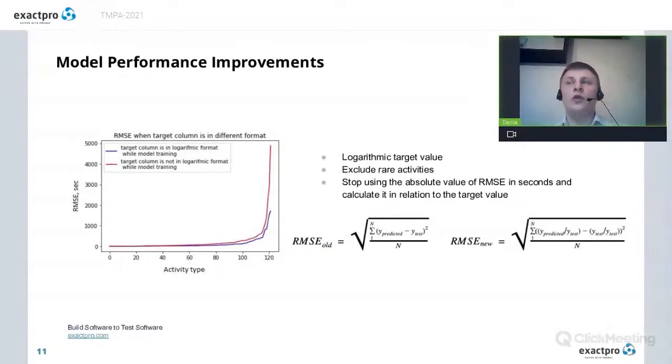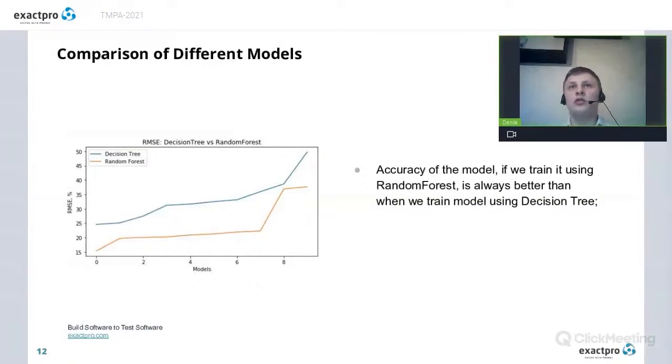Also, during all our experiments, we could see that the longer activities produced the bigger RMSC, if we measure it in seconds. Even if for short activities, everything was fine. So to fix it, we decided to recalculate our metric using the following formula. In this case, our metric was calculated in relation to the target value, and it's measured in percentages. It allowed us to reduce a gap between duration of short and long activities. And as a result, all activities contribute to the RMSC value equally.